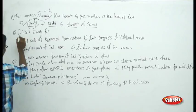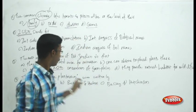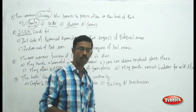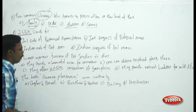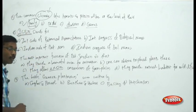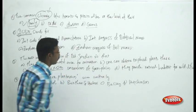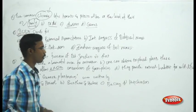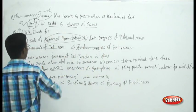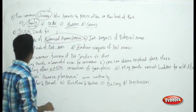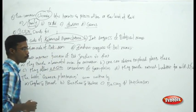The next question asks what ICBN stands for. The choices include International Code for Botanical Nomenclature, International Congress of Biological Names, Indian Code of Botanical Nomenclature, and Indian Congress for Biological Names. The 'I' stands for International, so we eliminate Indian choices. Between Botanical Nomenclature and Biological Names, ICBN stands for International Code of Botanical Nomenclature — a forum started during the Linnaeus period for naming plants.